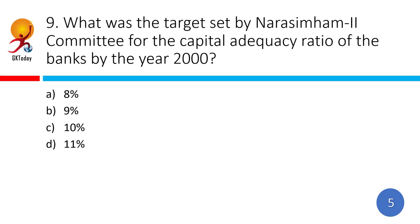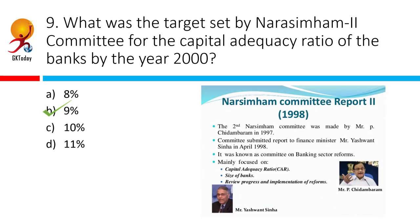What was the target set by the Narasimham 2 Committee for the Capital Adequacy Ratio of banks by the year 2000? The correct answer is 9%. The Narasimham 2 Committee suggested that the target should be raising the capital adequacy ratio to 9% by 2000 and 10% by 2002, with penal provisions for banks that fail to meet these requirements.